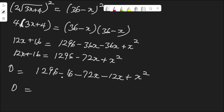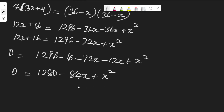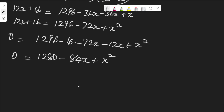So we can rewrite this as a standard quadratic: 0 equals s squared minus 84s plus 1280. Let me factorize this.